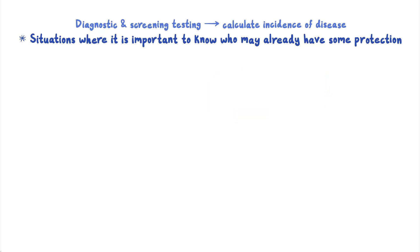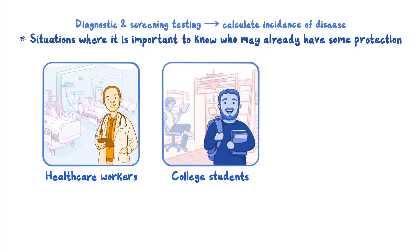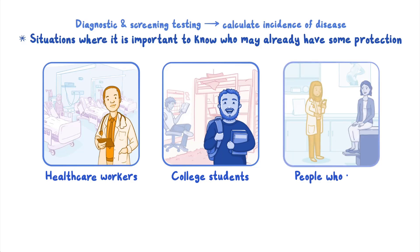For example, individual healthcare workers might want to know they have protection against certain diseases because they often come into contact with infected people at work. Some colleges might require proof of this protection because many students live close together and can easily spread disease. And people who want to become pregnant might need to know if they are protected against certain diseases that could negatively affect their pregnancy.